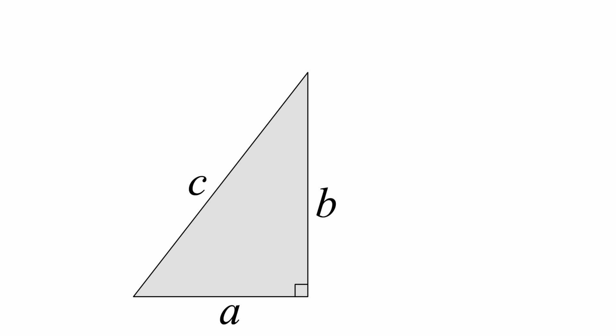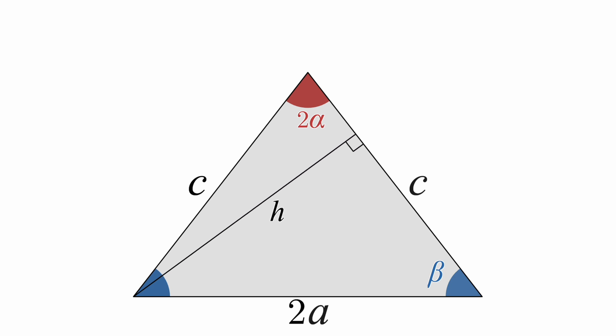First, I'll label the two acute angles of the triangle alpha and beta. Then, reflect the triangle around one of its legs to create an isosceles triangle whose apex angle is 2 alpha, and whose base has length 2a. Next, I'll draw a line which splits this triangle into two right triangles and call its length h.